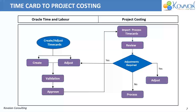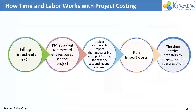We can then review it, and if any adjustments are needed, we can do that at the time card level or at the costing level, and then it can go into the process. So we fill the time sheets in OTL, the project manager approves it, and then we run the Import Cost process for it to go to Project Costing. In costing, we can make adjustments and changes, and then process it.